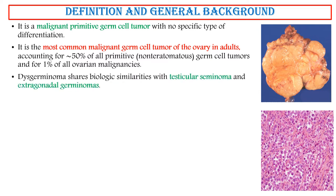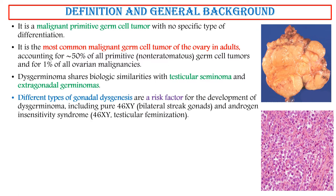Dysgerminomas share biologic similarities with testicular seminoma and extragonadal germinomas. Different types of gonadal dysgenesis are a risk factor for the development of dysgerminoma, including 46XY bilateral streak gonads and androgen insensitivity syndrome, 46XY testicular feminization.